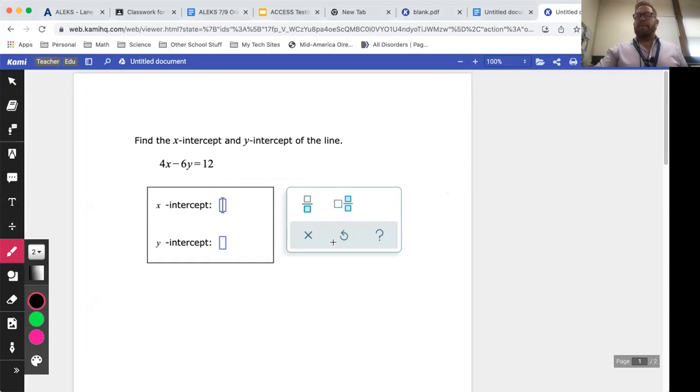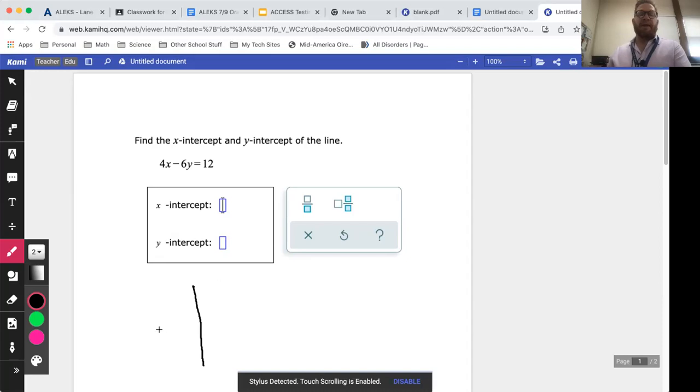The thing to think about here, and this will help you remember how to do this, is that if you've got a graph and you've got a line - let's say that this is my line right here - your X intercept would be here, that's where it crosses your X axis, and your Y intercept is right there.